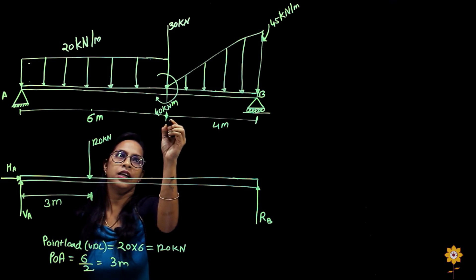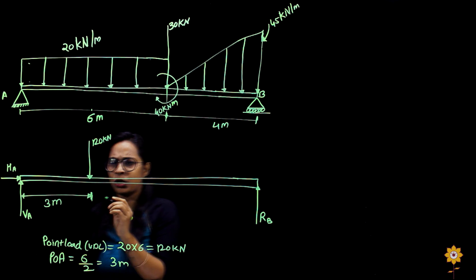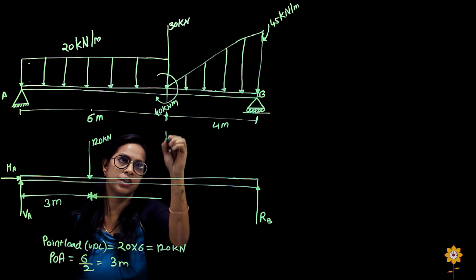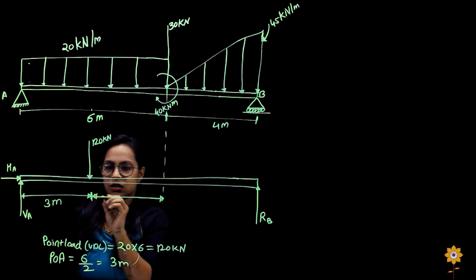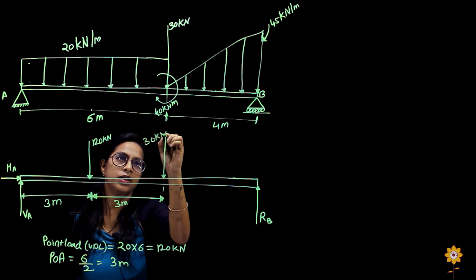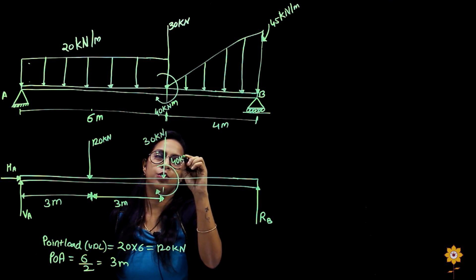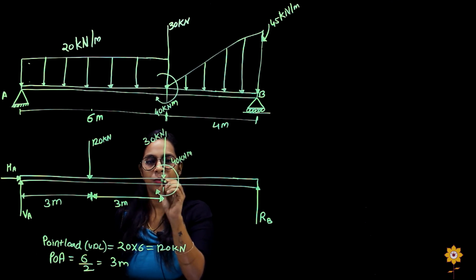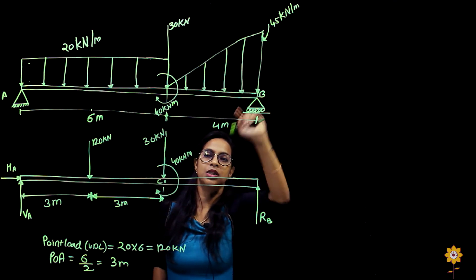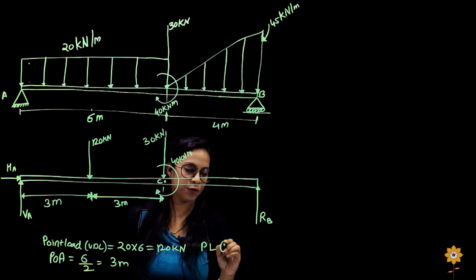At the end of 6 meters, there is already a force of 30 kilo Newton and a couple of 40 kilo Newton meters. So 3 meters from that point, we have a force of 30 kilo Newton and at the same point a couple of 40 kilo Newton meters. Let this point be C. From point C, over a span of 4 meters, we have a UVL — uniformly varying load.